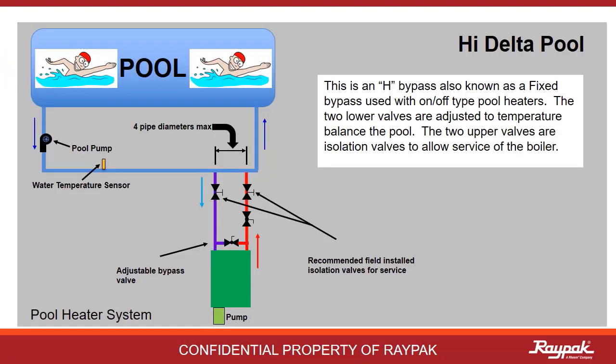As with the water heater type, if it is a pool heater, there is only one mode of operation. Here the decoupler is the distance between the supply and the return of the recirculation loop. The two upper valves are there to isolate the heater for service, while the two lower valves are there for temperature regulation.